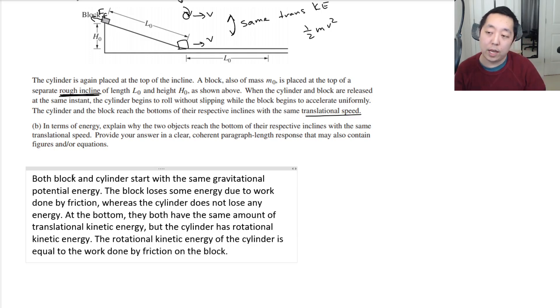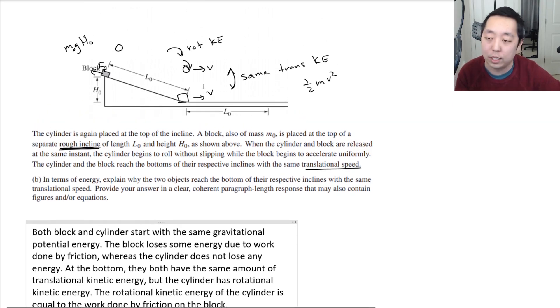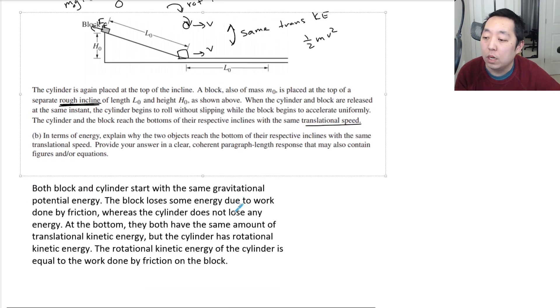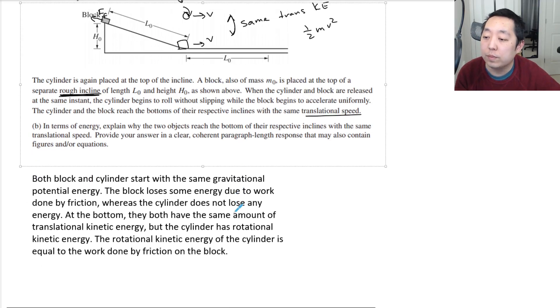The rotational kinetic energy of the cylinder is equal to the work done by friction on the block. Basically, we would say that whatever difference in energy here between these two scenarios must be due to the work done by friction that reduced the energy on that block. Okay. And so that's it. That's how I would do, work, energy. I think I explained everything that I would put in to a paragraph there.